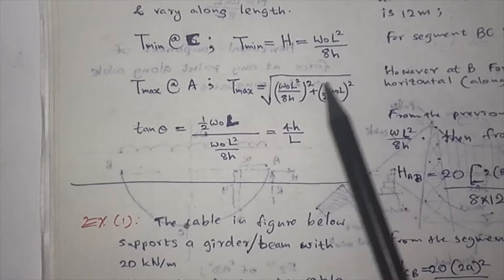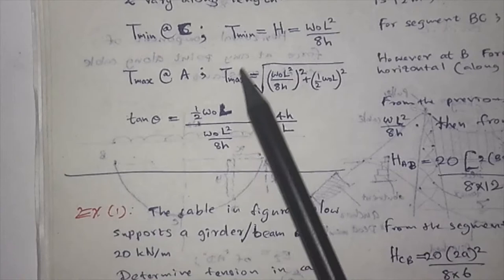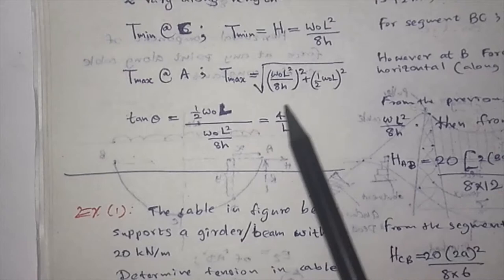Maximum tension is at point A. T max can be found as square root of this equation using tan theta—opposite side over adjacent side. Using that you can find tan theta and the angle.